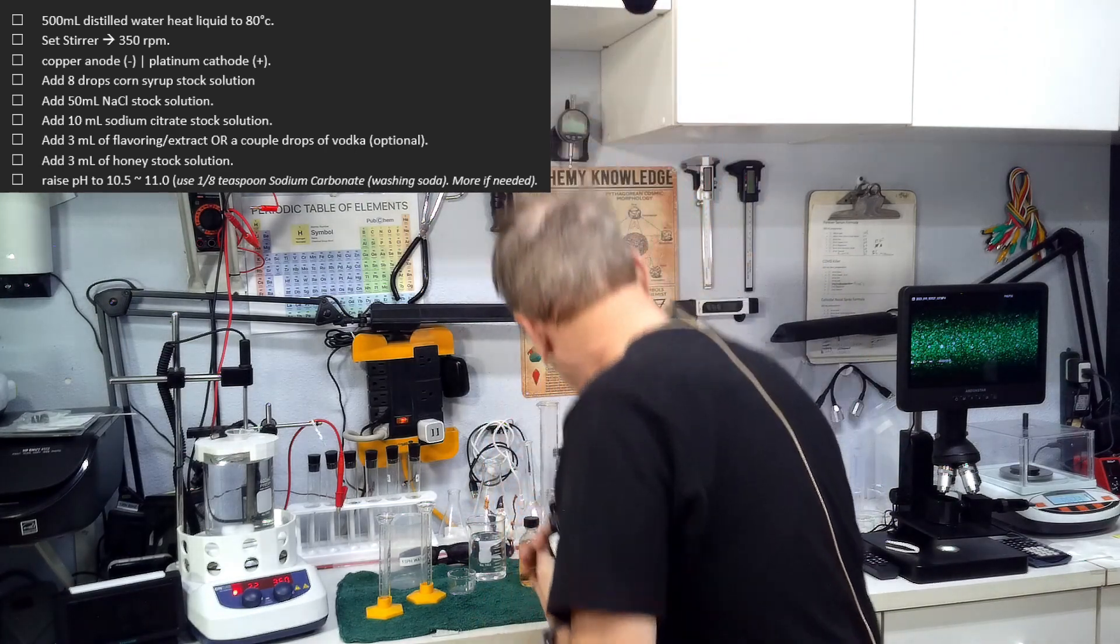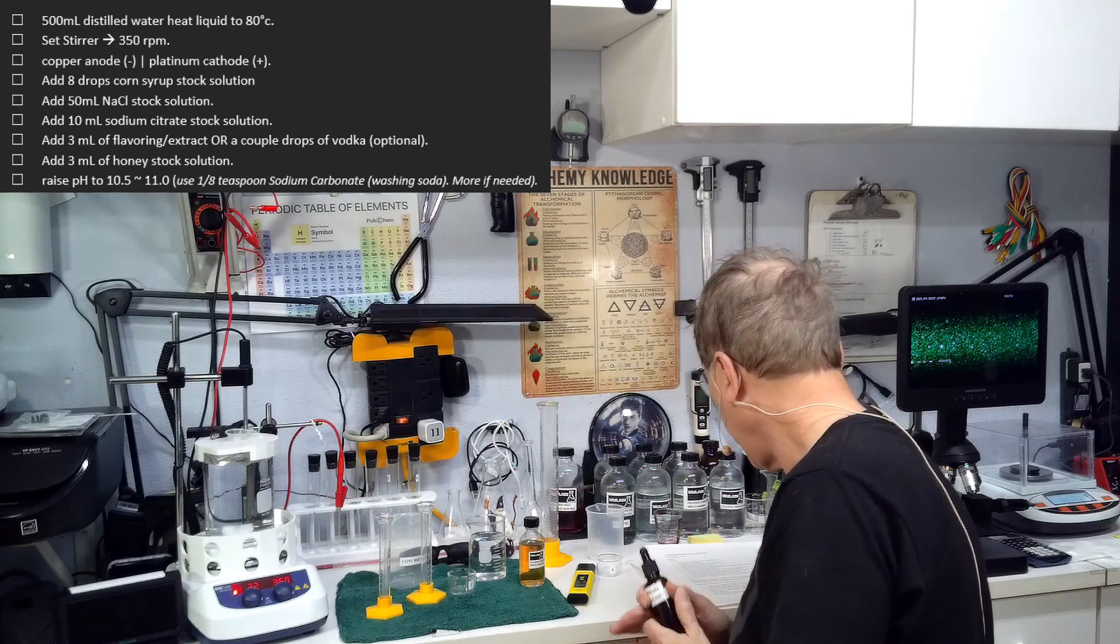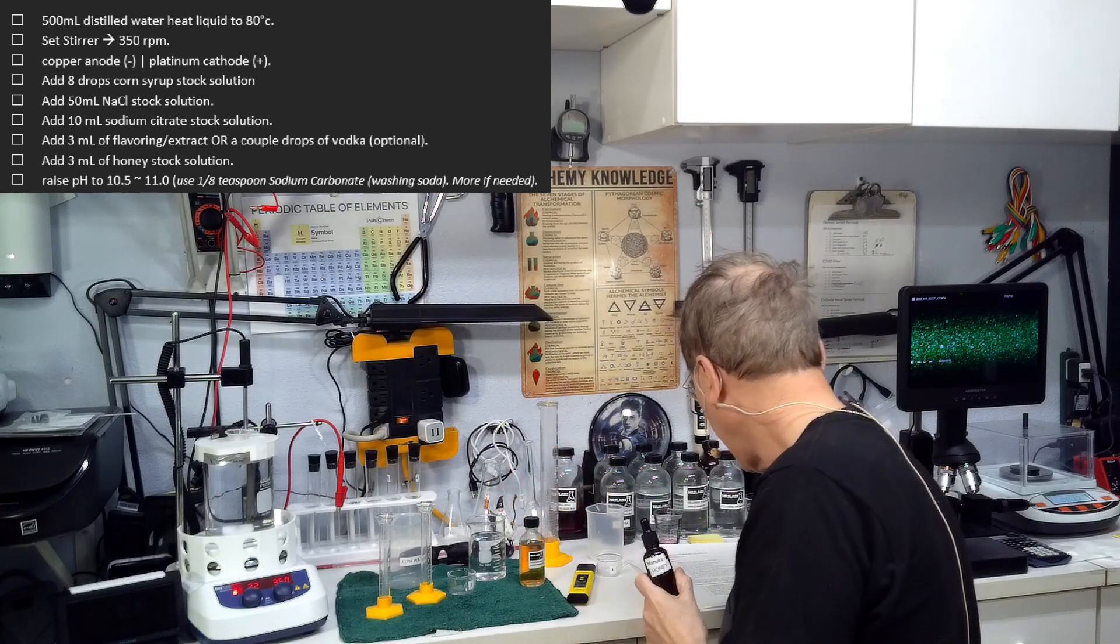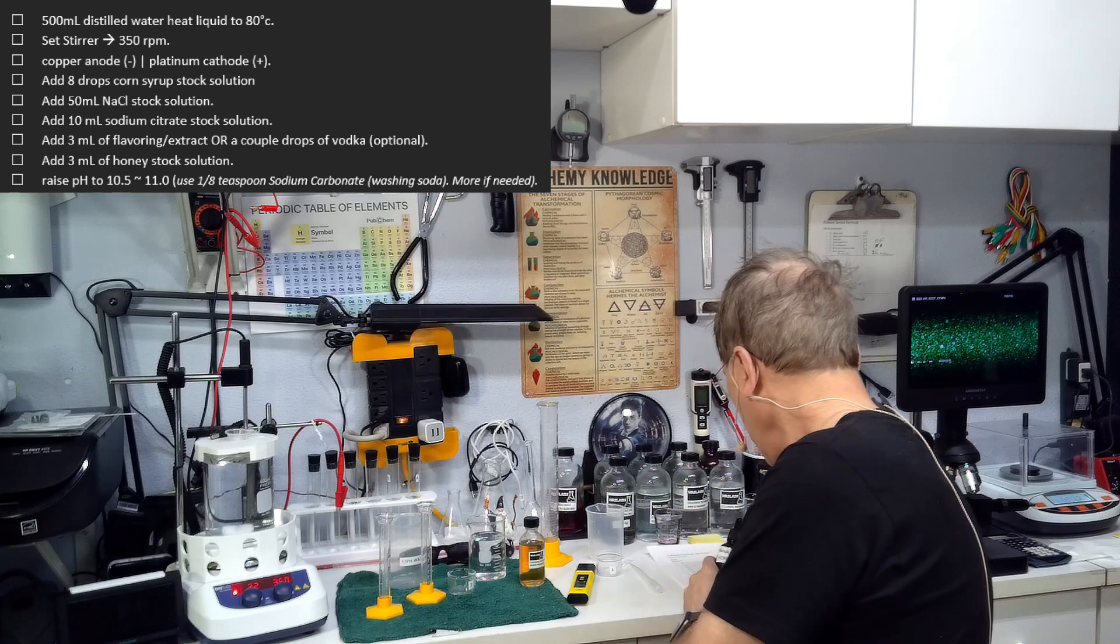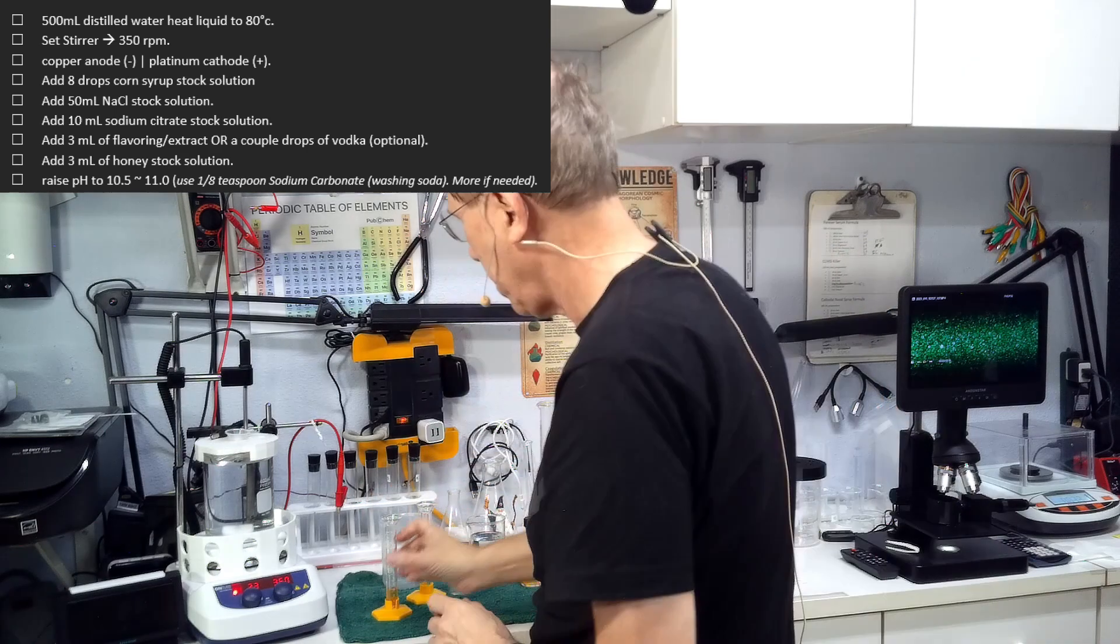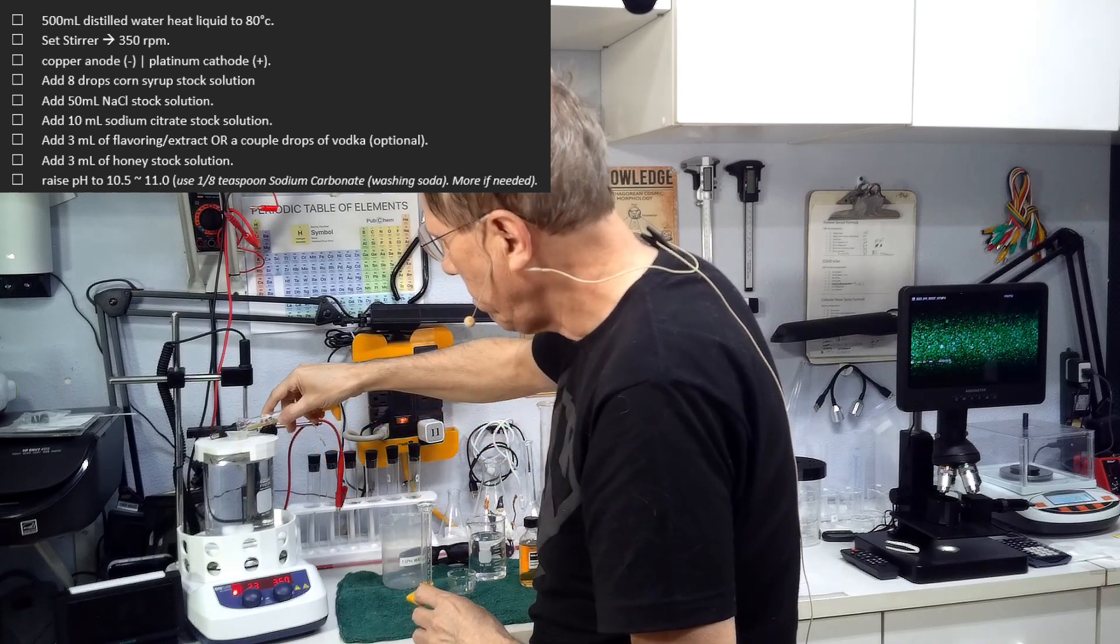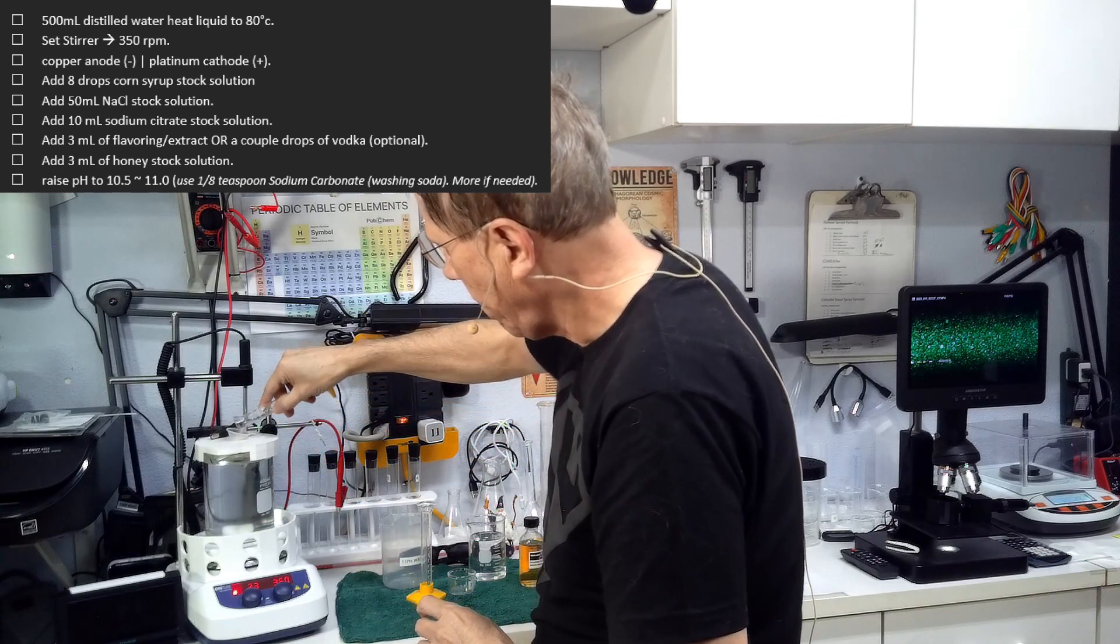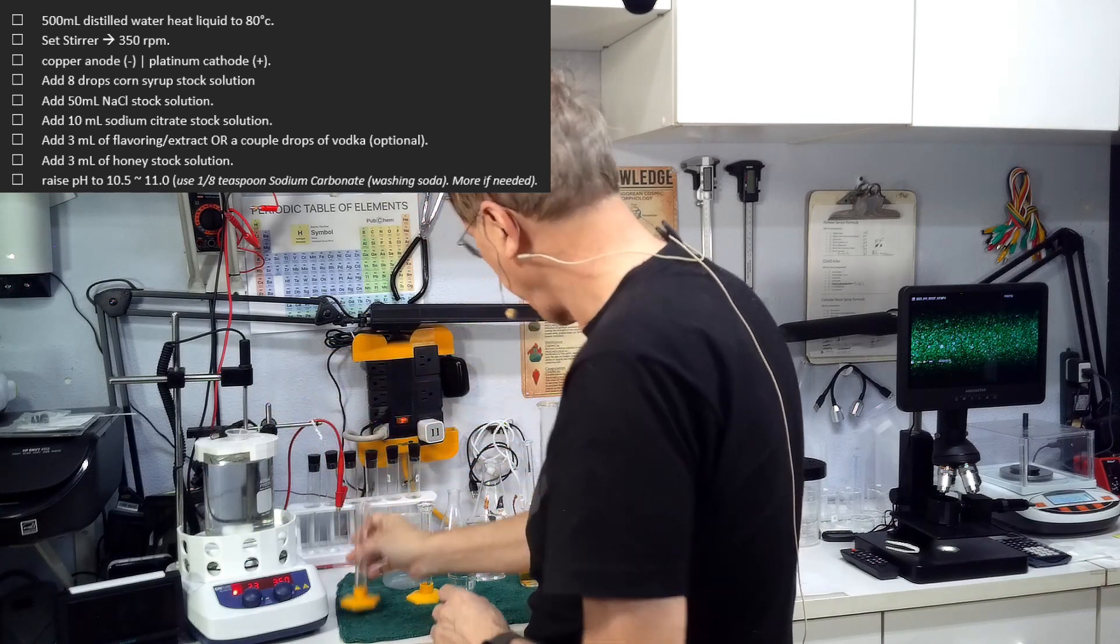Honey, I use Manuka honey because it's a little bit more efficient, but regular honey will work as well. This is a 50-50 mix of honey. We need three milliliters of honey and we're going to pour that in there. Let that all mix together very nicely.